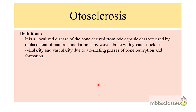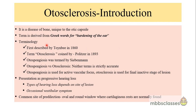Otosclerosis is a localized disease of the bone derived from the otic capsule, characterized by the replacement of mature lamellar bone by woven bone with greater thickness, cellularity and vascularity, due to the alternating phases of bone resorption and bone formation. It is a disease of the bone unique to the otic capsule, which is the bony labyrinth. From the name itself we can make out that there is some sclerosis or hardening of the ear bones, as the term is derived from Greek words meaning the hardening of the ear.